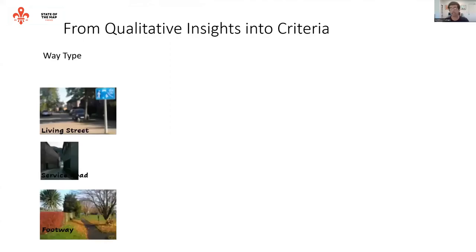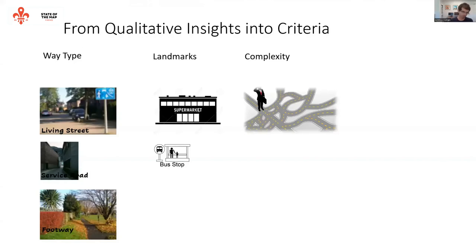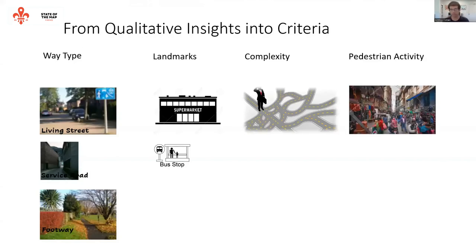For example, the way-type tag in OpenStreetMap is very helpful to learn how much a specific segment or street is accessible. In addition, many landmarks help visually impaired pedestrians to know where they are, and these landmarks are also mapped in OpenStreetMap. Finally, we also consider complexity, and pedestrian activity, which is a temporal phenomenon — meaning it changes over time. All of these criteria are used by visually impaired pedestrians and can be interpreted from OpenStreetMap data.